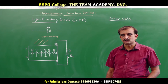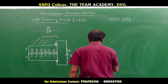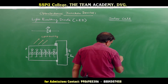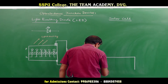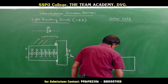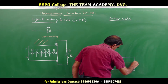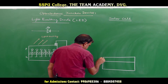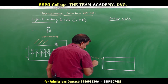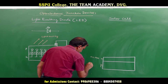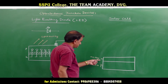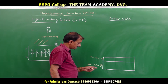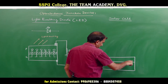Let us see the construction and working of a solar cell. A solar cell is a PN junction diode with P-type and N-type materials. An N-type material is grown on a P-type material — the N-type layer is about 0.3 micrometers thick and the P-type material is about 300 micrometers thick. This is the depletion region.